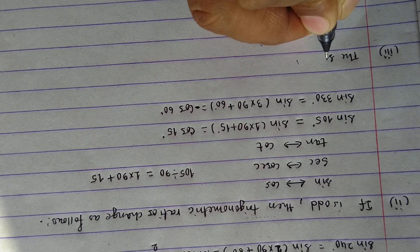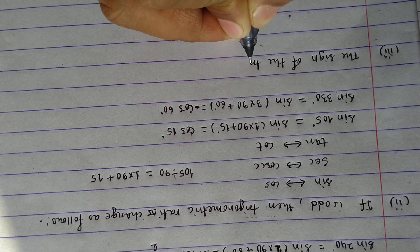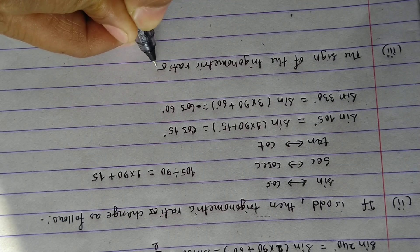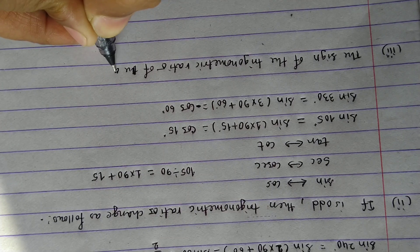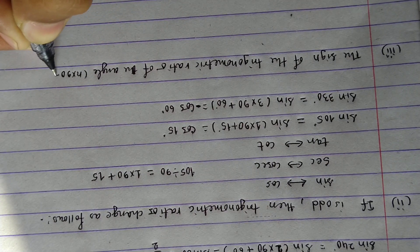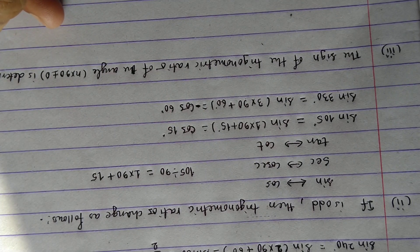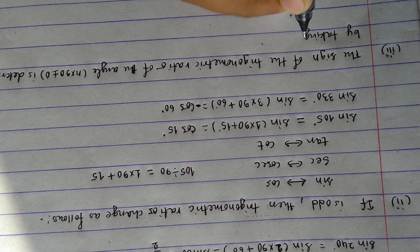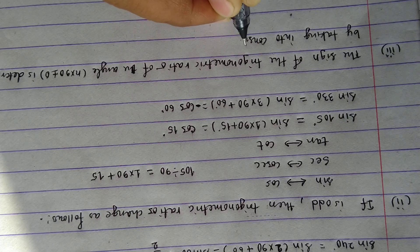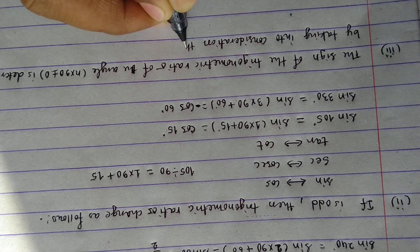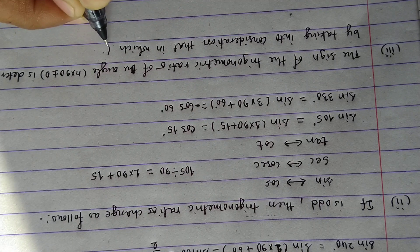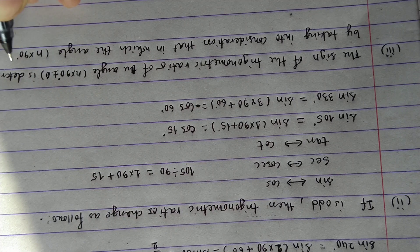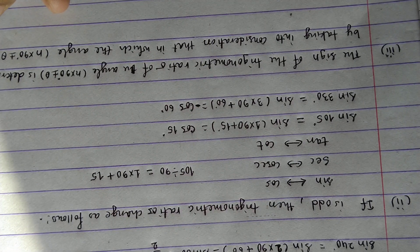The first step is to determine the sign of the trigonometric ratio of the angle by taking into consideration in which quadrant the angle lies.